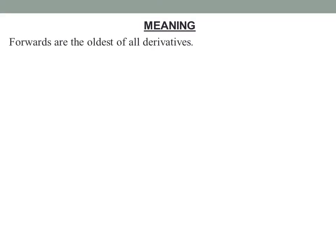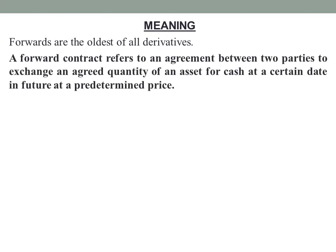As we know, there are mainly four types of derivatives: forwards, futures, options and swaps — and forwards are the oldest of all derivatives. A forward contract refers to an agreement between two parties to exchange an agreed quantity of an asset for cash at a certain date in the future at a predetermined price.